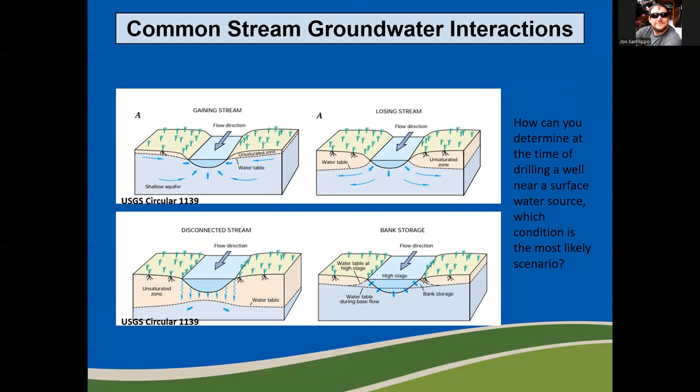How could you determine at the time of drilling a well what scenario the stream next to you is most like? If the static water level in the well for an unconfined aquifer is higher than the current stream elevation, then it is pretty likely that the stream is a gaining stream. Vice versa, if the water level is lower than the stream height, then it is likely a losing stream controlling or affecting the static water level in the well. Streams can change from gaining to losing to disconnected to bank storage all in the span of one year, causing variations in static water levels of as much as many feet per year.